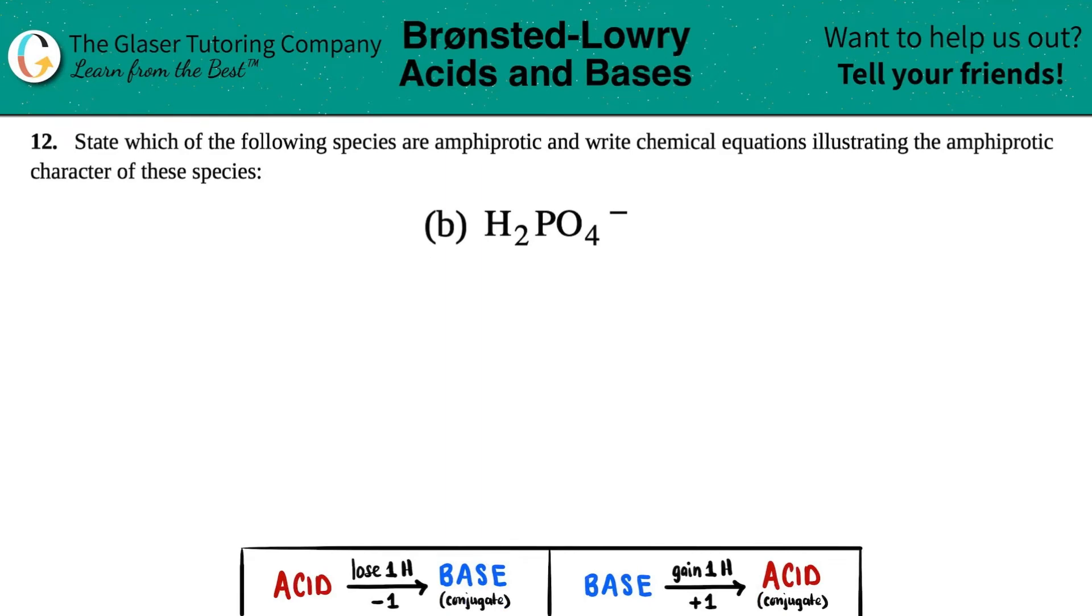Number 12: State which of the following species are amphiprotic and write chemical equations illustrating the amphiprotic character of these species. Then we have letter B. So is H2PO4- an amphiprotic, aka an amphoteric species? Basically these species act as an acid or can act as an acid and a base.